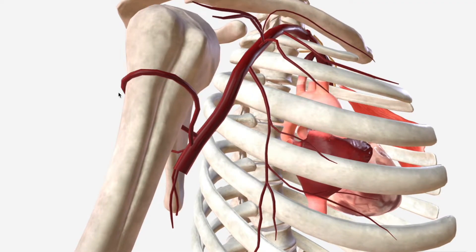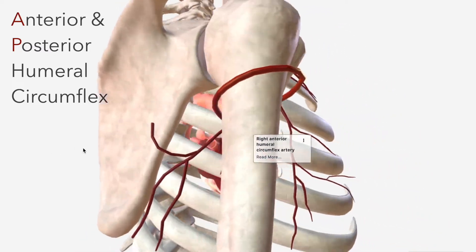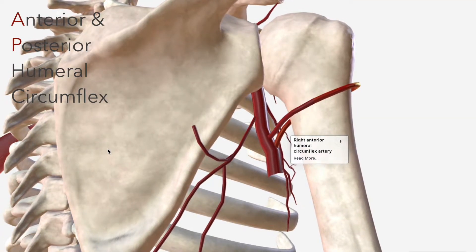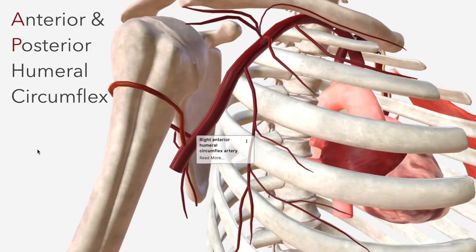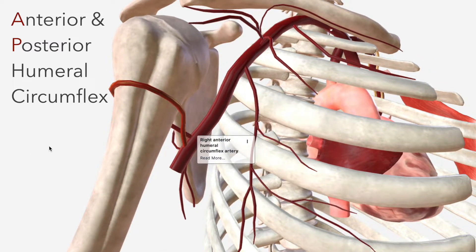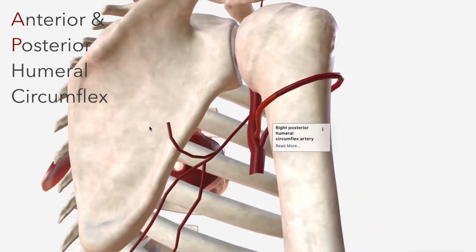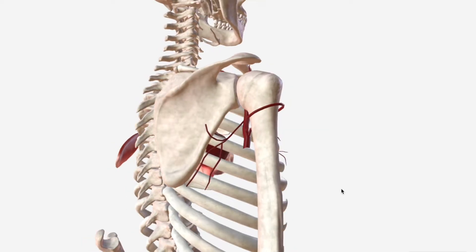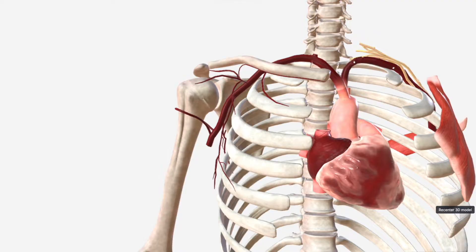Lastly, A and P, we have the anterior and posterior humeral circumflex arteries, which together form a fairly spectacular ring around the surgical neck of the humerus. They supply the head of the humerus with arterial blood, as well as the glenohumeral joint, and the posterior humeral circumflex is also said to supply the deltoid and the triceps brachii. So that's it for the branches of the axillary artery — SAL-SAP. Remember that one.